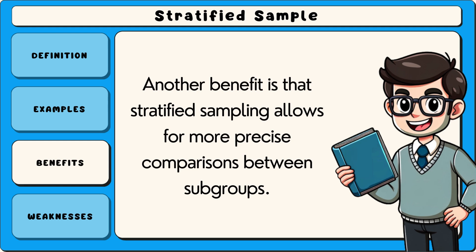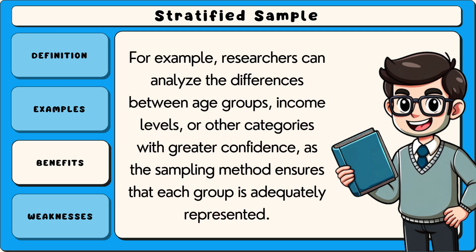Another benefit is that stratified sampling allows for more precise comparisons between subgroups. For example, researchers can analyse the differences between age groups, income levels, or other categories with greater confidence, as the sampling method ensures that each group is adequately represented.